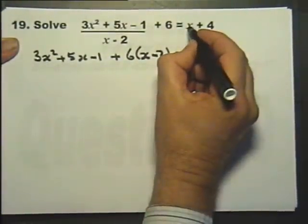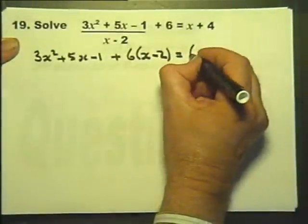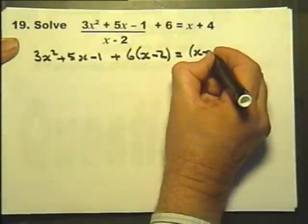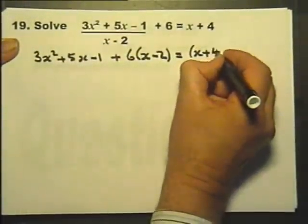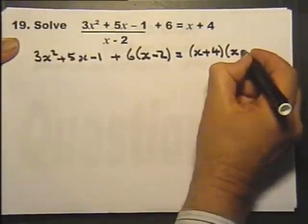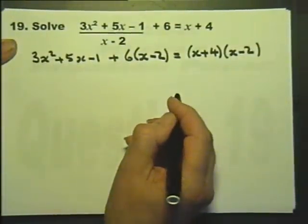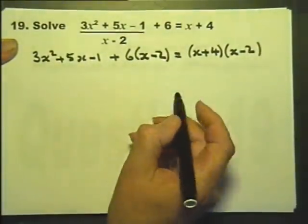But then I must multiply that by x-2, and multiply that by x-2, and that by x-2, which we can show by doing it like that. So that's one approach — get rid of the fraction.